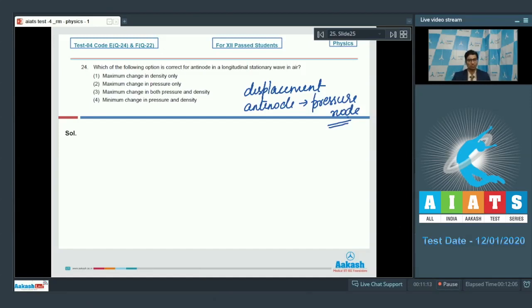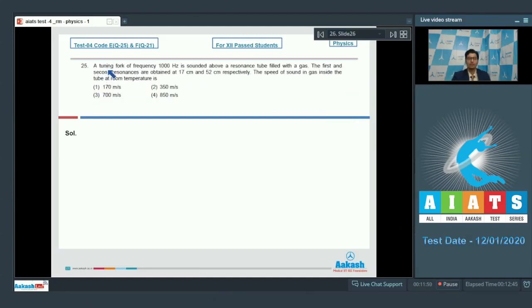displacement antinode in a stationary wave is equal to pressure node and in a pressure node, the variation of pressure is minimum, which means that the density varies in the minimum manner as well. And therefore, the answer for this particular question is option number 4. Now let us discuss question number 25.